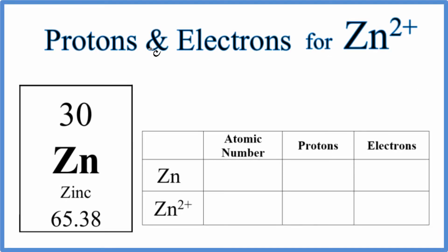In this video, we'll find the number of protons and electrons for Zn²⁺, the zinc ion. The first thing to do is look at zinc on the periodic table. We can see that zinc is a neutral element. That means it doesn't have a negative or positive sign.